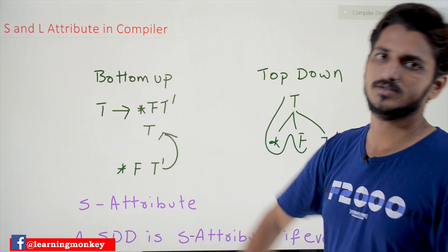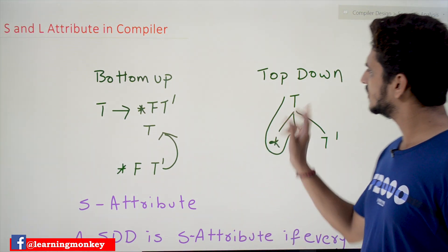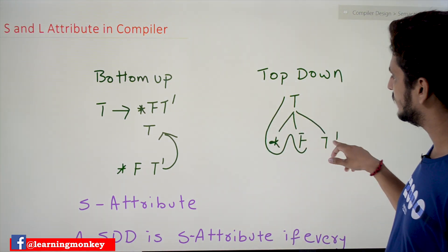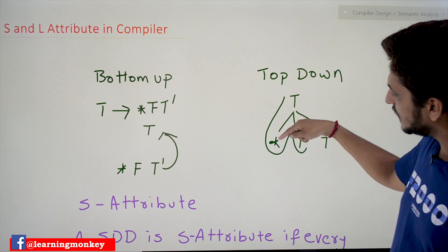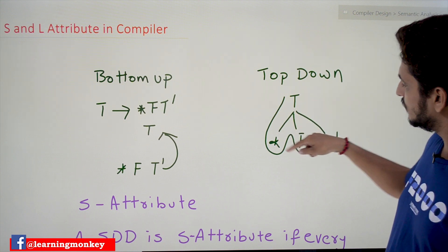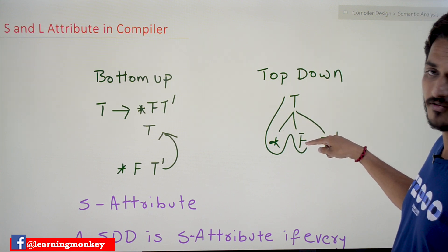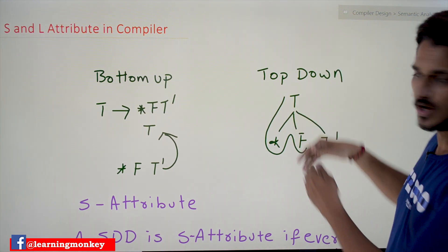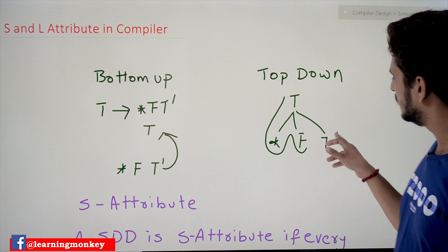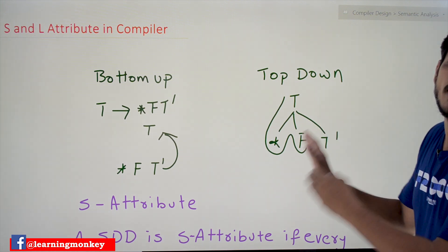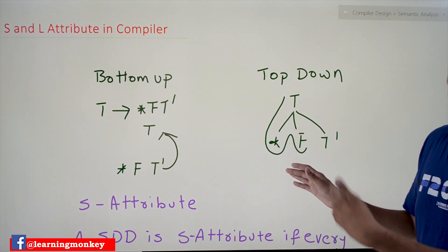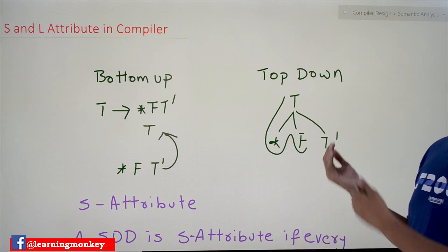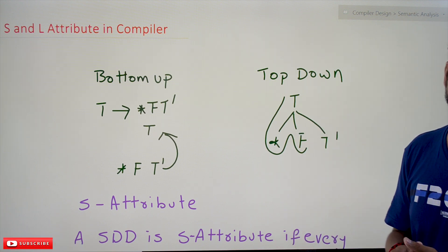Similarly, in the top-down approach for T → * F T', T is going to elaborate *. After completion of it, it is going to check for F, and after that it checks for T'. This means it goes top-down left to right — before going to T', the left variables are evaluated first. After completion of left, it moves to right. So the top-down approach follows a left-to-right evaluation.